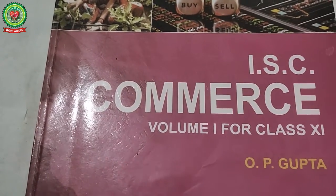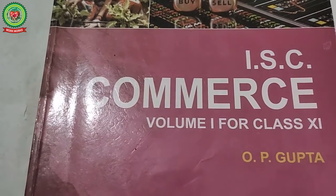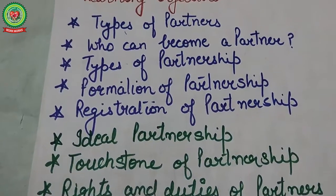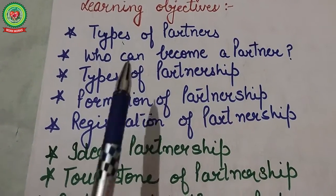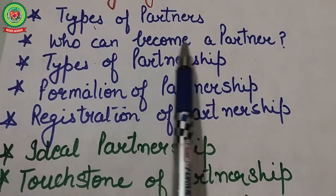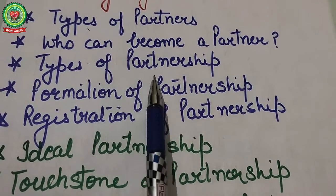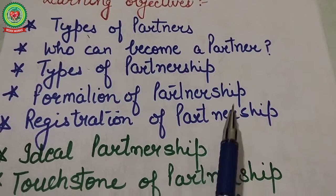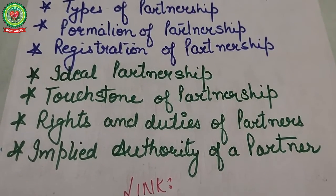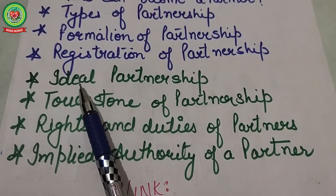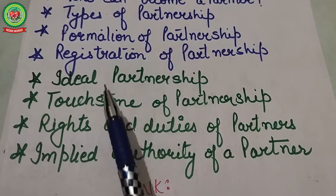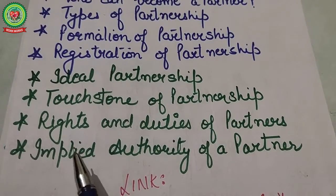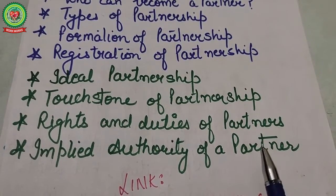Hello students, hope you are well and working hard to achieve your goals. Welcome to the commerce class. As yesterday we had discussed types of partners, who can become a partner, types of partnership, formation of partnership, and registration of partnership. So today we will discuss our next and last four topics of this chapter: ideal partnership, touchstone of partnership, rights and duties of partners, and implied authority of a partner.